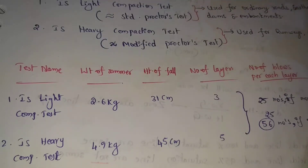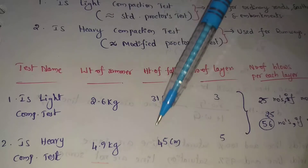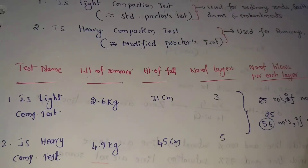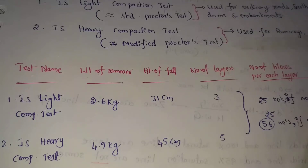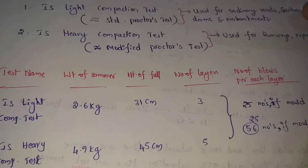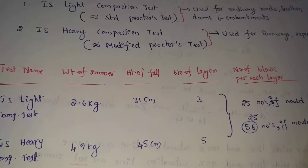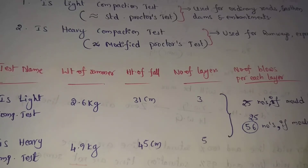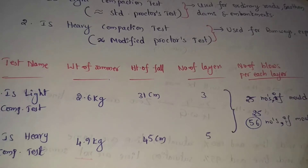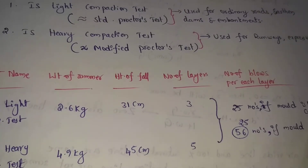For the light compaction test, a car rammer is used. The compaction test is always performed in layers. For the light compaction test, the mold is filled with soil sample in 3 equal layers. For the heavy compaction test, the mold is filled with soil sample in 5 layers.